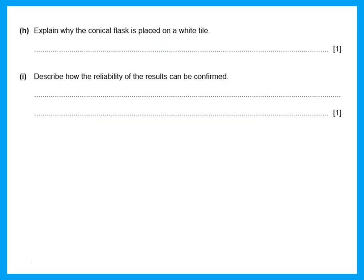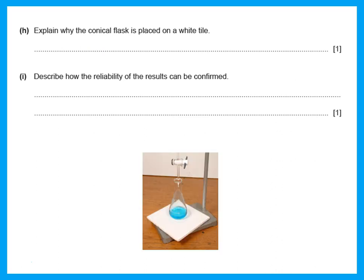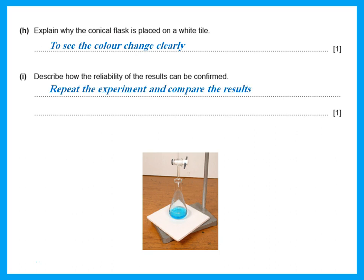The conical flask is placed on a white tile so that you can see the color change clearly. To confirm the reliability of results, you should repeat the experiment and compare the results, or identify any anomalous results.